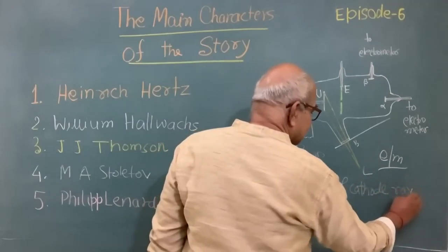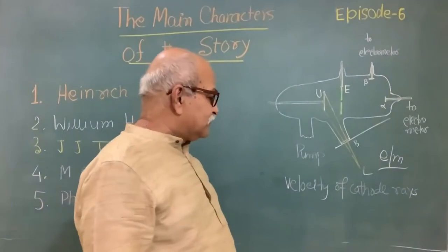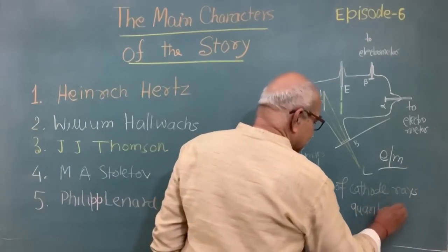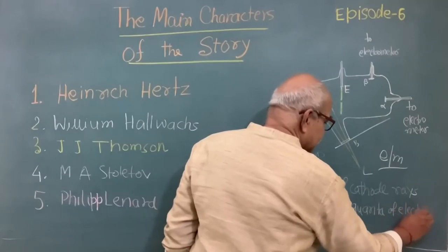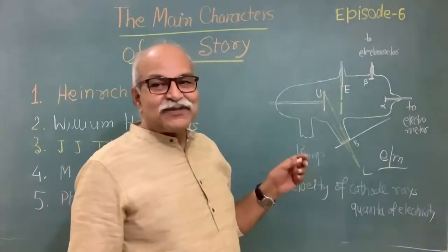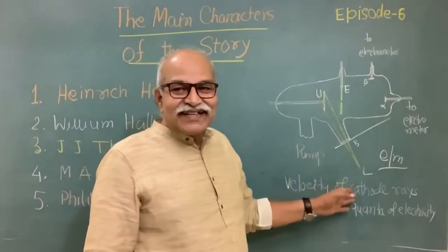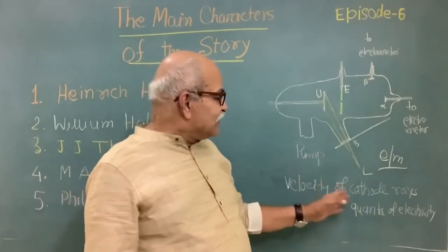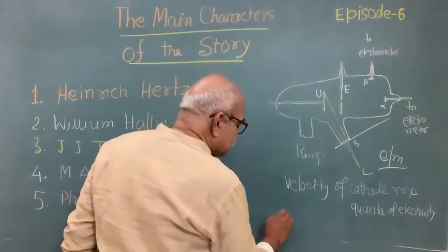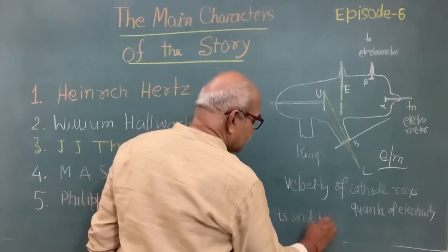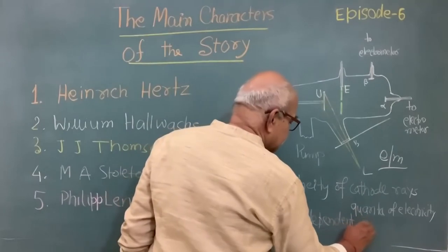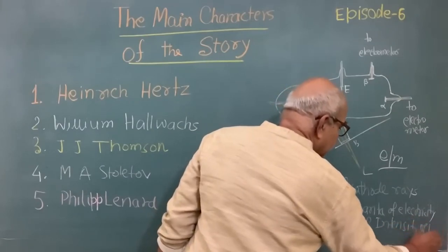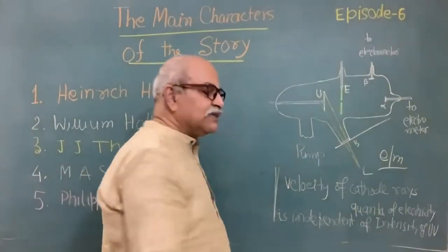He talks in terms of velocity; nowadays we talk in terms of kinetic energy. He writes 'cathode rays' — not electrons. In fact, Lenard uses the word 'quanta' — quanta of electricity. Thomson uses the word 'corpuscles.' He uses the word 'quanta.' And finally, the accepted word is 'electron.' So the velocity of these quanta is independent of the intensity of UV light. This is a very, very important result.